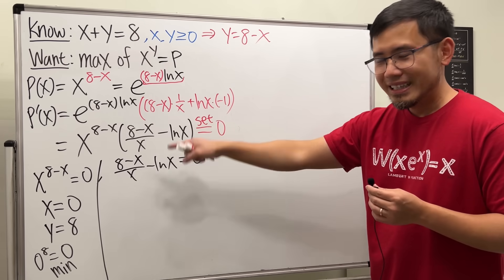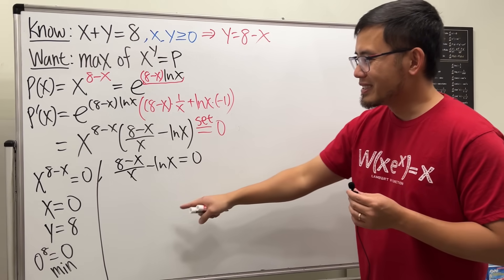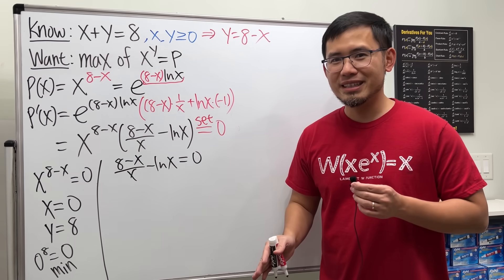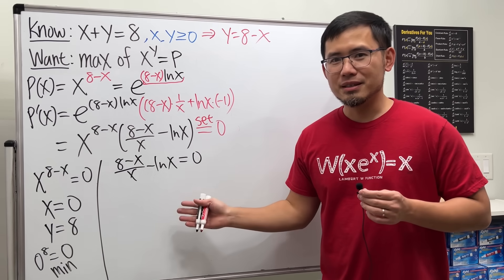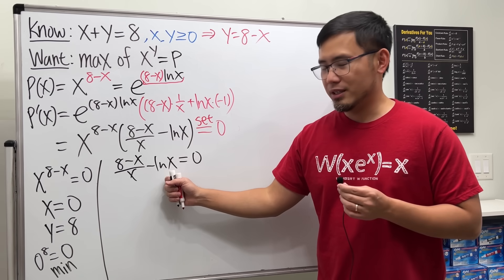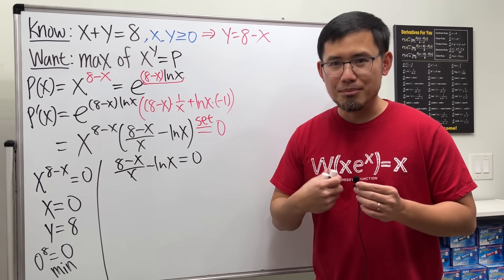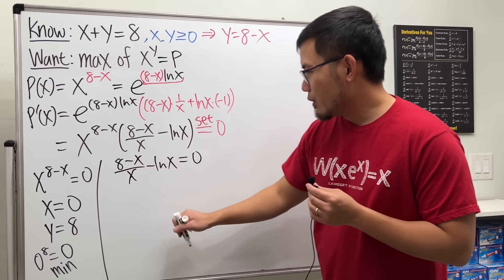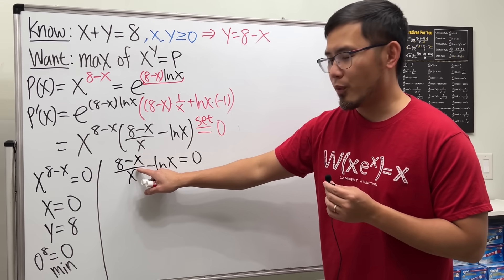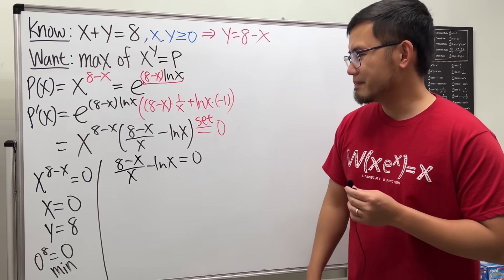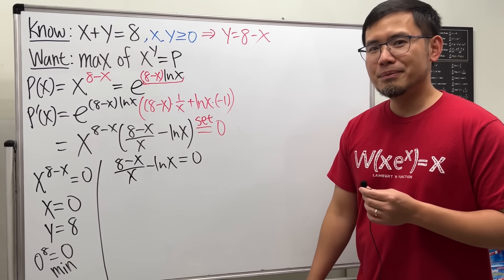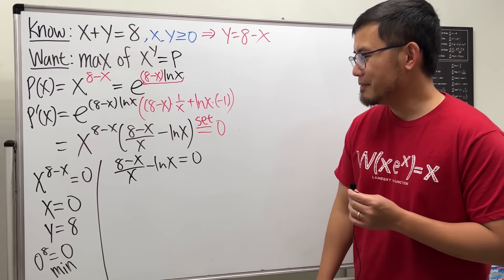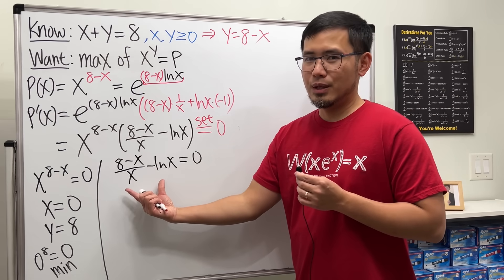So this other equation is our hope. And this is why this question is so much more difficult than the usual calculus 1 optimization questions — because in order to solve for x here, we will have to use the Lambert W function. Check this out first: whenever we have x to some power and a natural log, you can give the Lambert W function a try.